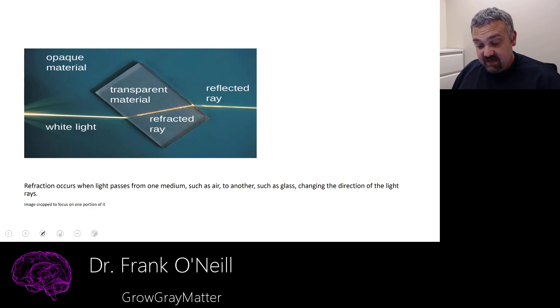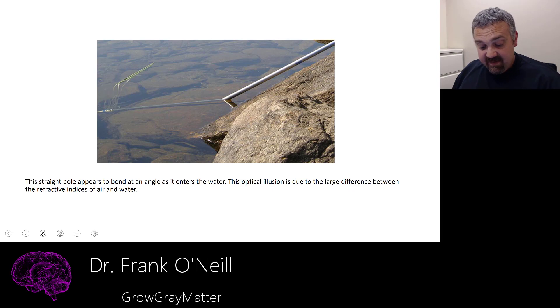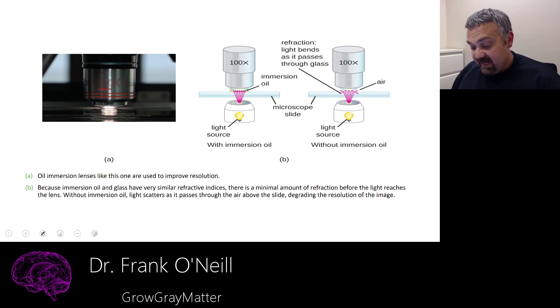So here, just to reiterate what refraction is, as light travels through a substance, through a medium, it's going to bend. And we have to try to limit that. And that is where immersion oil comes into play. This is just a cool example of it. This is actually a straight pole, but it looks bent because the refractive index of water is different than the refractive index of air.